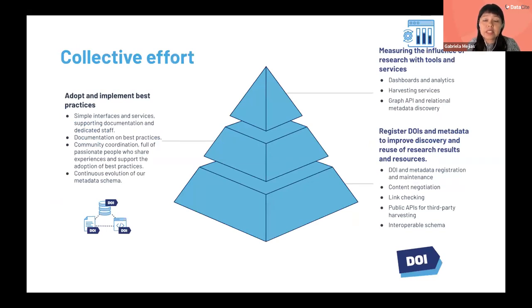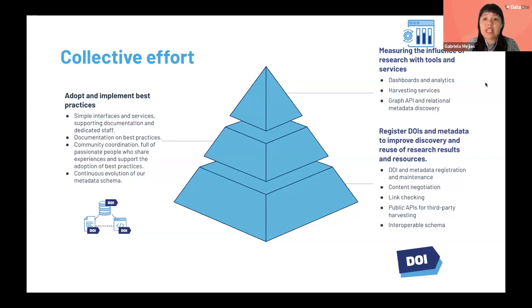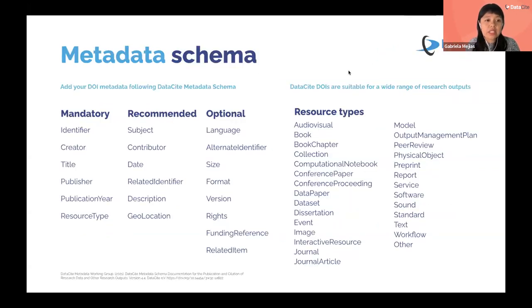These are the services we provide and enable. As I mentioned, DOI and metadata registration help improve the discoverability and the reuse of research production. We also provide tools to track the influence of research, like dashboards, analytics, and APIs. We also promote best practices to identify and share information about research. We have a metadata schema — the Datasite metadata schema's current version is 4.4. The schema contains mandatory, recommended, and optional attributes.